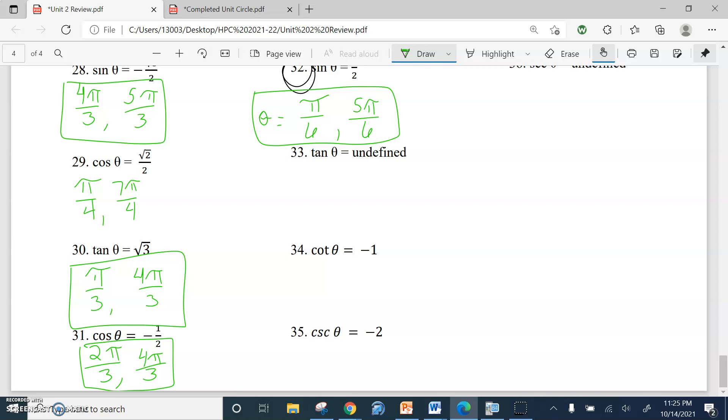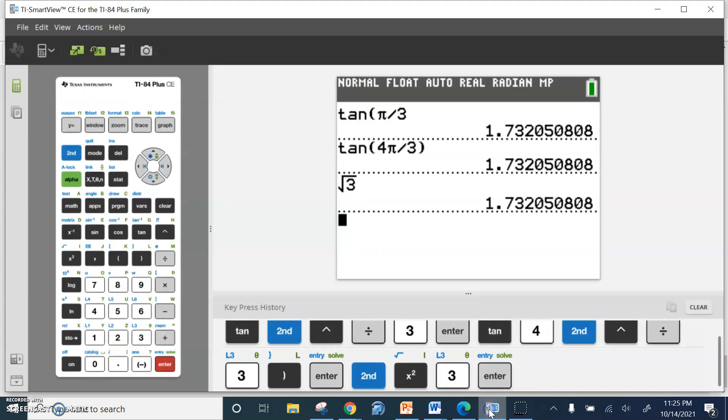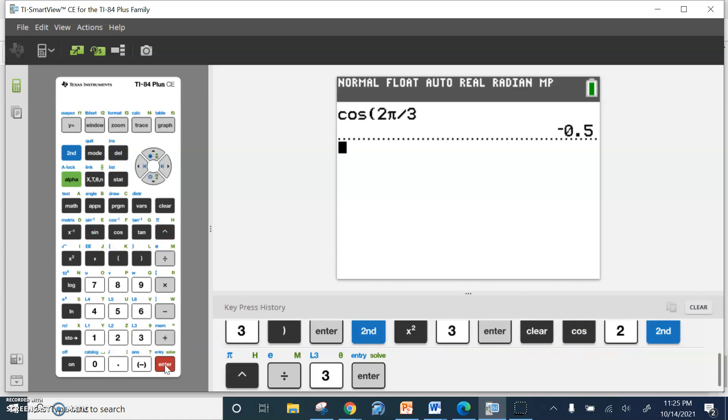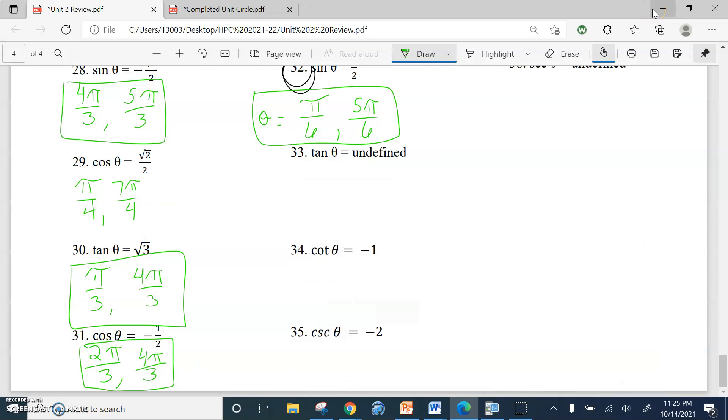We're going to check that. Cosine 2 pi over 3. Cosine second pi over 3. Bing, negative 1 half. Cosine 4 pi over 3. Cha-ching, look at that, negative 1 half. So we're good, we're golden. That's 31.